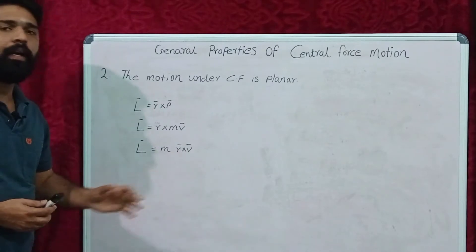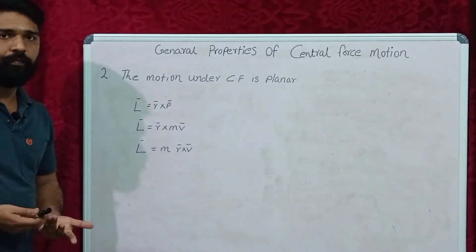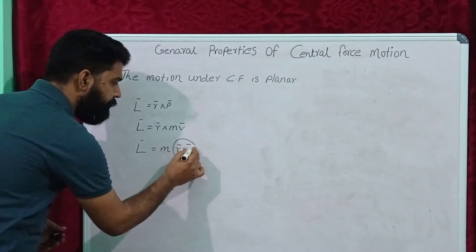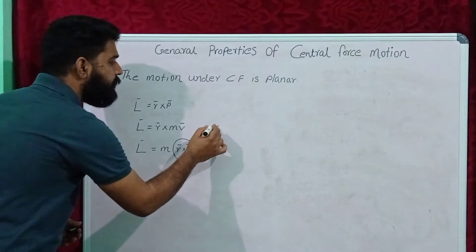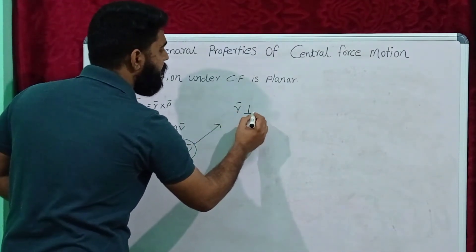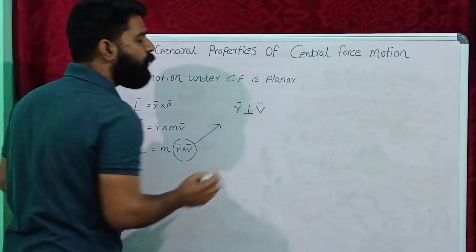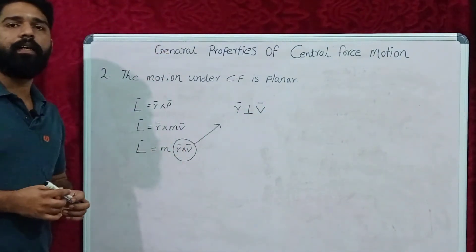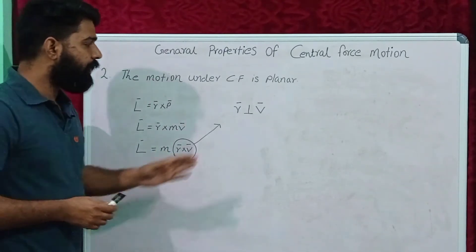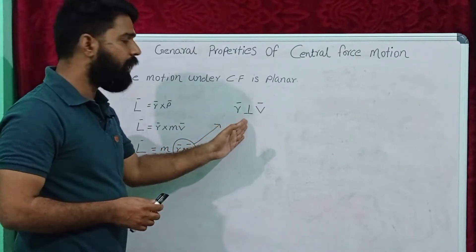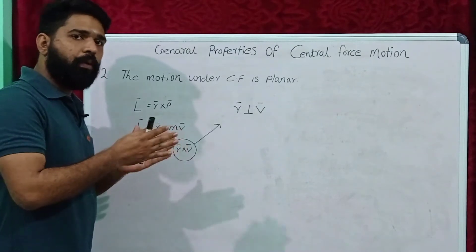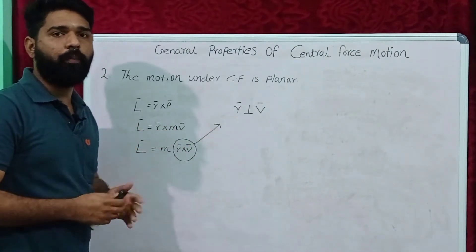Because R and V are vectors but M is a scalar. The term R cross V says that vector R is perpendicular to vector V, because this is a cross product. So R is perpendicular to V — that means the position vector is perpendicular to the velocity of the object.